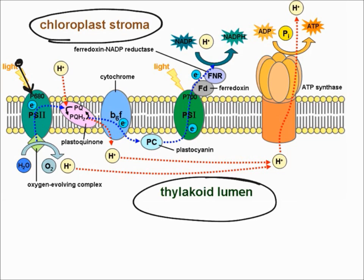What first occurs is a photon, or light, comes and hits the photosystem. After it hits the photosystem, it excites an electron in Photosystem 2. This electron is then passed on to the next molecule called plastoquinone.